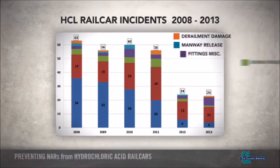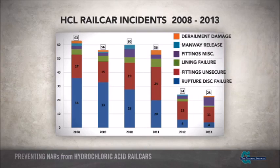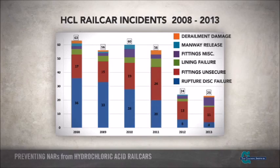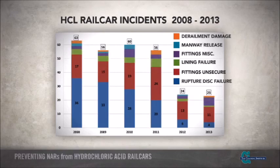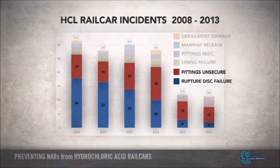This is a summary of the hydrochloric acid rail car incidents from 2008 through 2013, broken down by the cause or source of the leak as they were reported to DOT. The dark blue bar reflects leaks from the ruptured disc assembly, typically due to rupturing or damage to the ruptured disc itself or improper assembly of the ruptured disc housing. The dark red bar indicates leaks due to unsecured fittings, including valves, fill hole covers, and liquid lined flanges. The other colors reflect releases from other sources, including unsecured manway plates and damage resulting from derailments. Clearly, the biggest opportunity for improvement is reducing leaks from fittings, including valves and ruptured disc assemblies, by implementing proper securement practices.